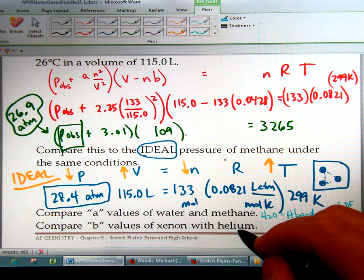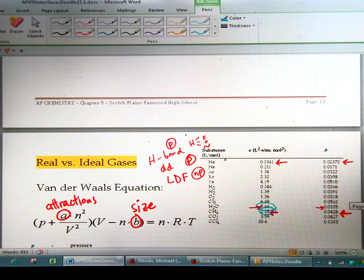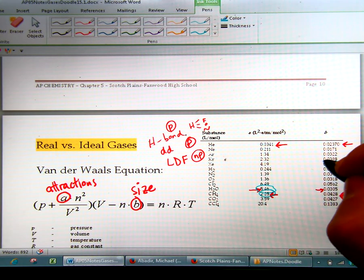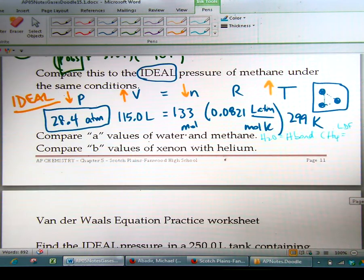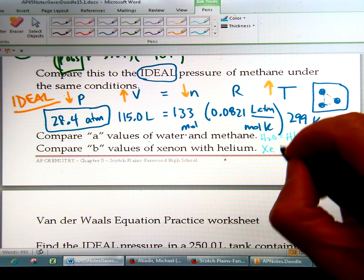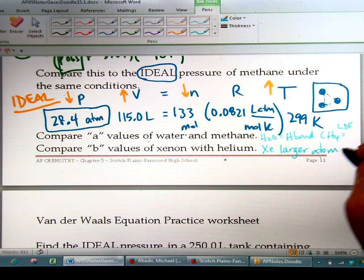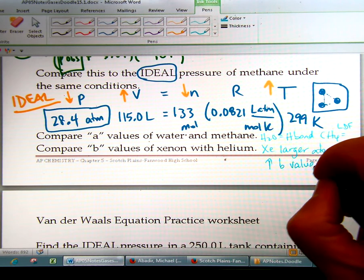Xenon and helium are both nonpolar. So what you do is you look for size. So xenon and helium. Here is the xenon size. Correction is 0.05, but the helium is 0.02. And that's because xenon is a larger atom because it has more energy levels. So it has a higher B value, which has to do with size.